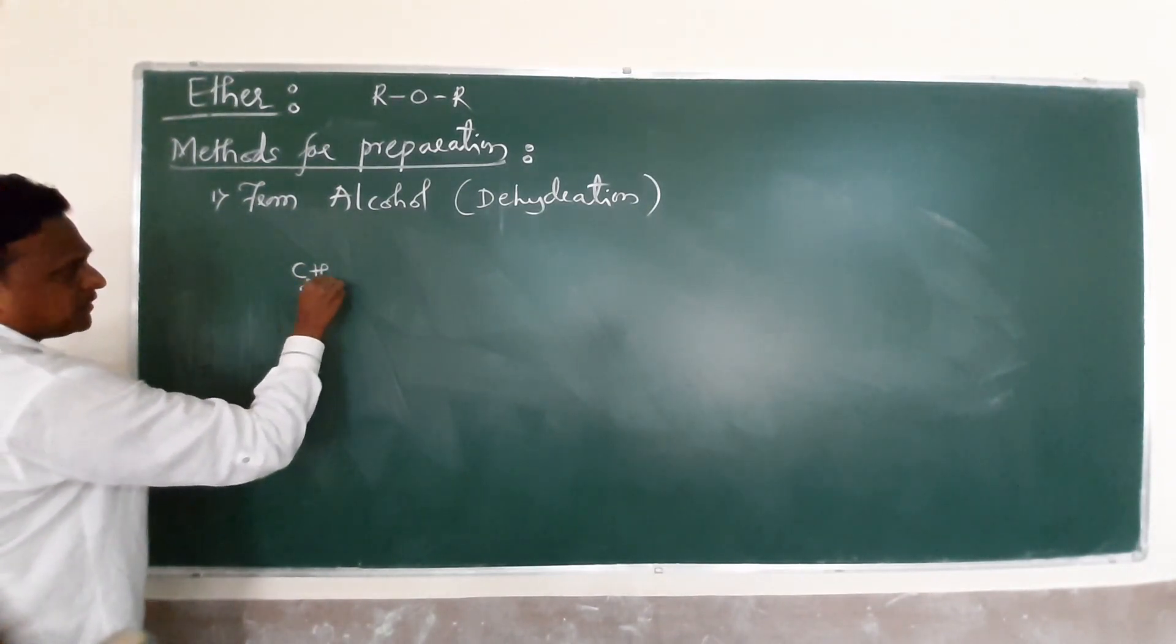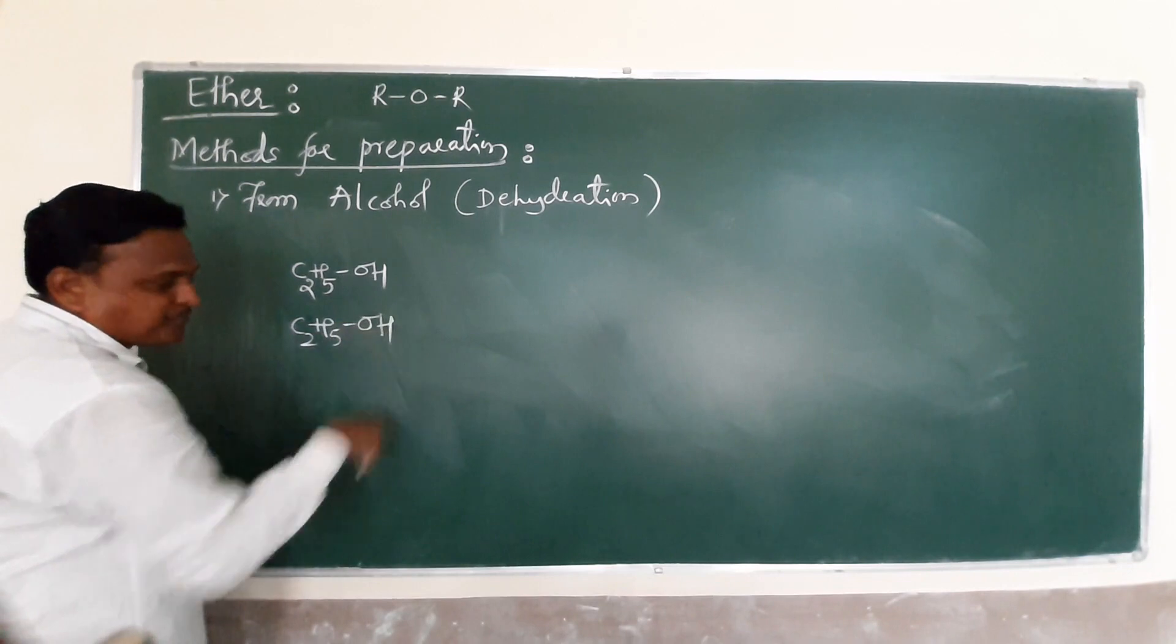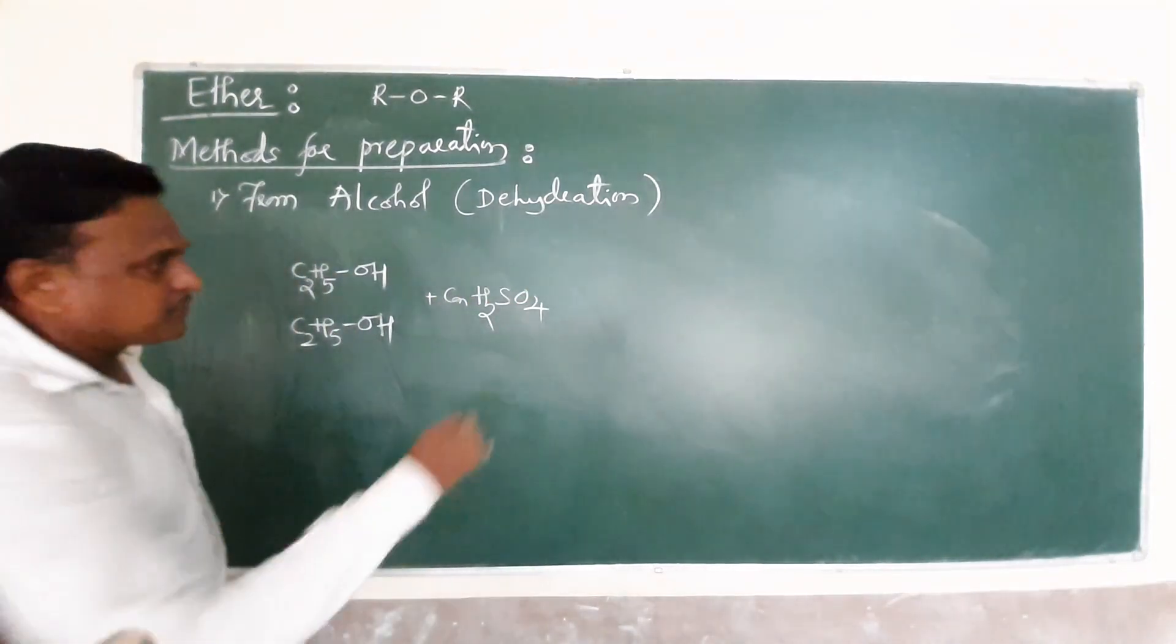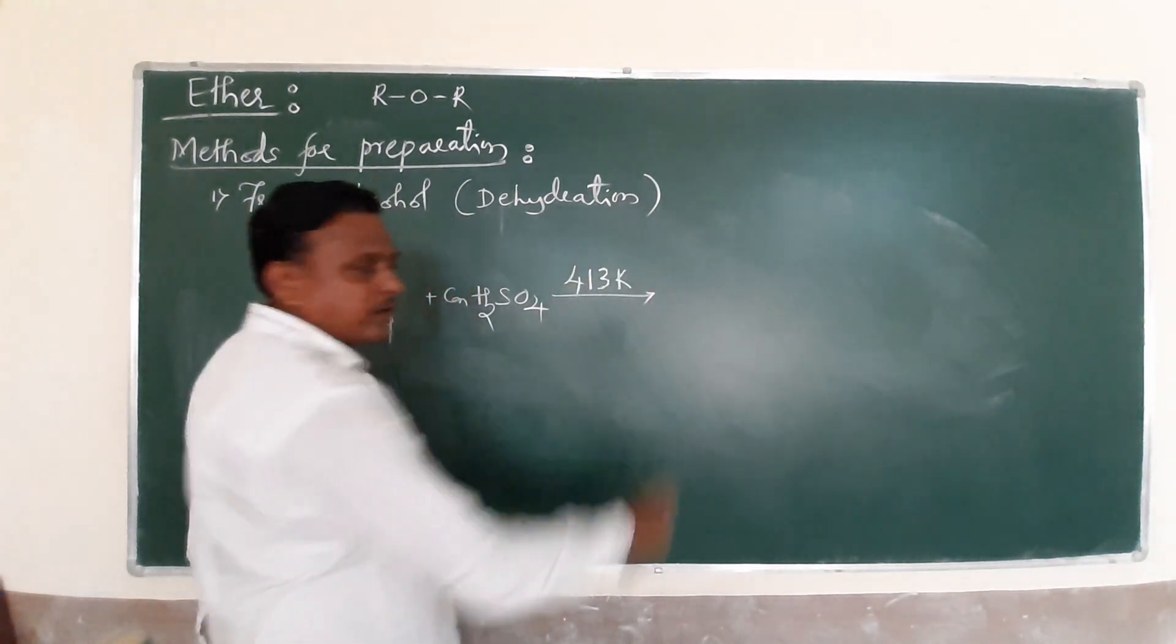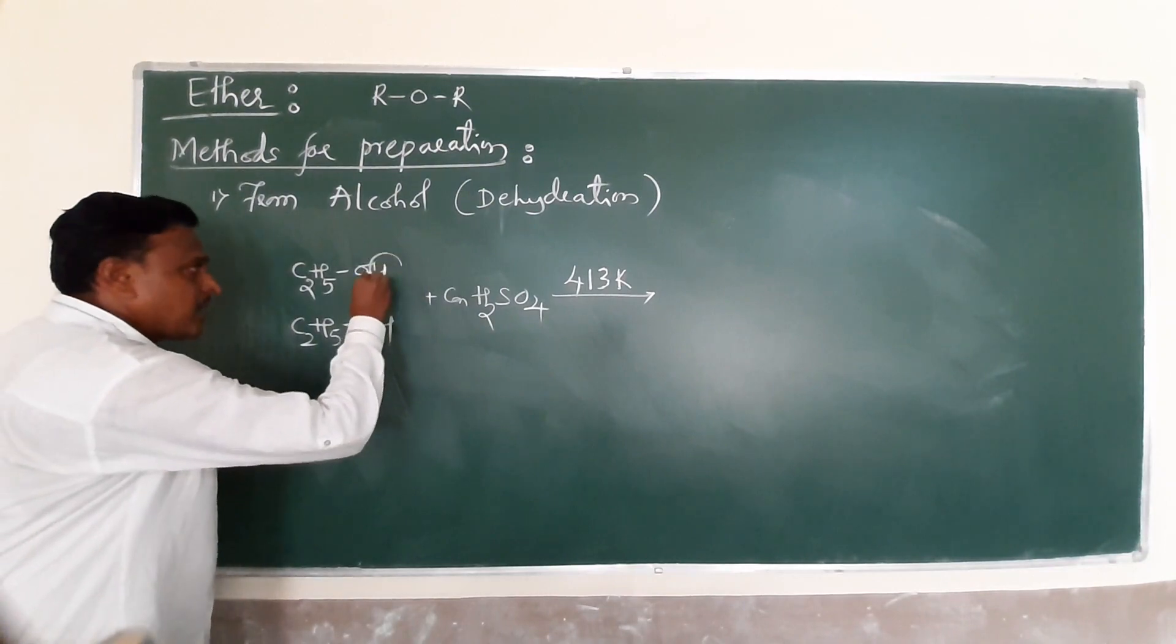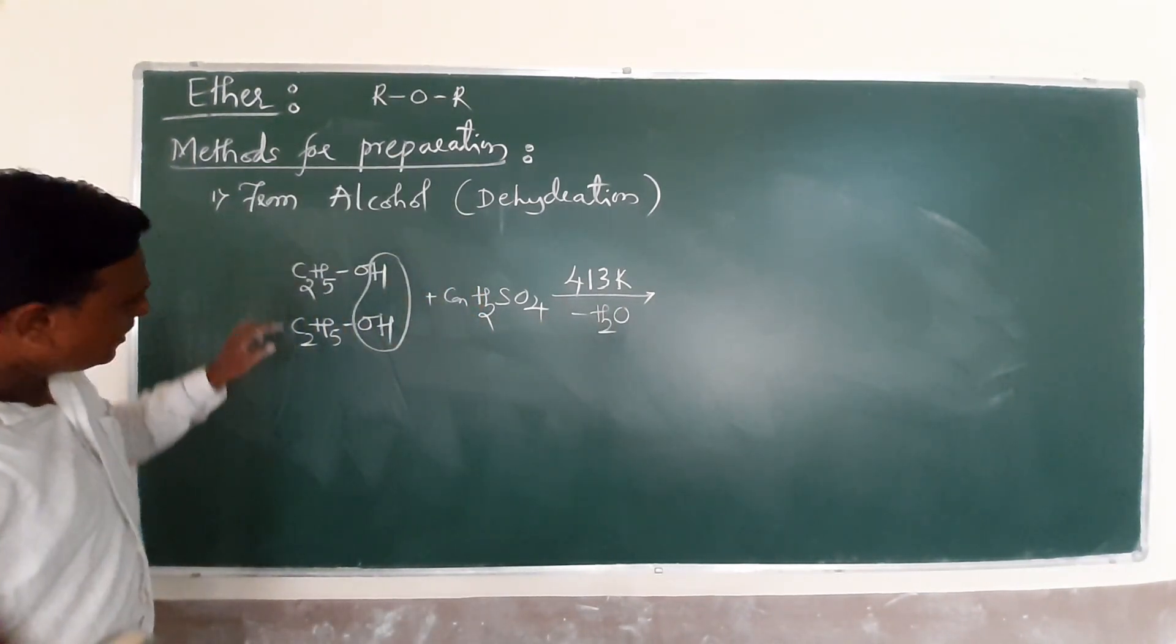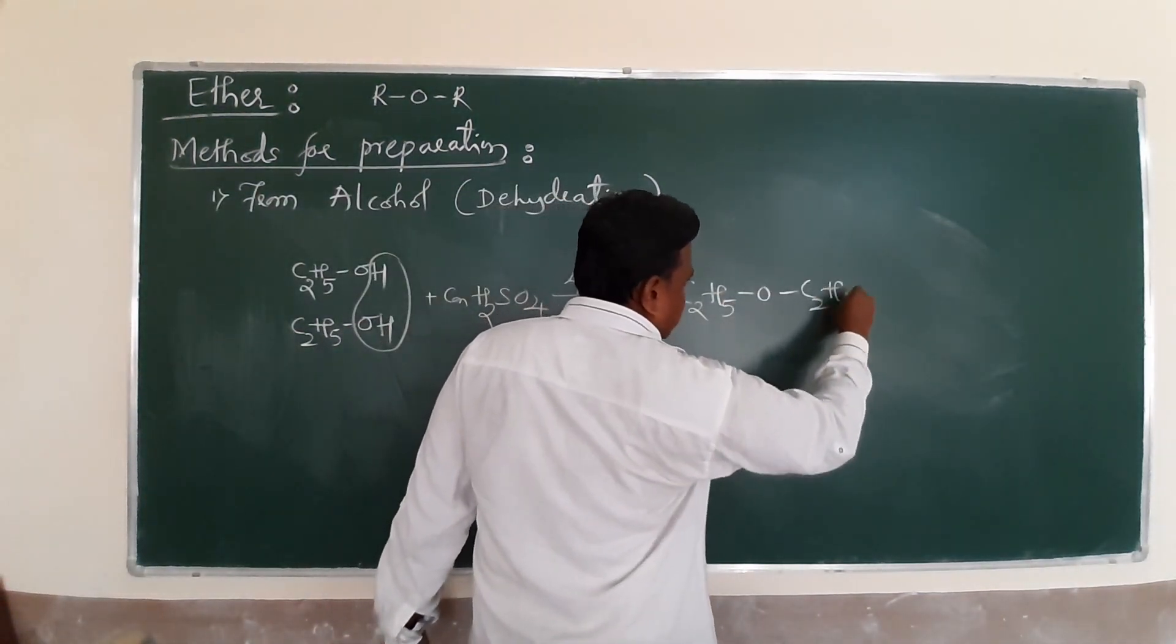In dehydration of alcohol, consider an example: C2H5-OH, ethyl alcohol, and another molecule of ethyl alcohol. Both are ethyl alcohol, which is treated with concentrated sulfuric acid and the temperature is very important - 413 Kelvin. Sulfuric acid acts as a dehydrating property which can absorb the water molecule.